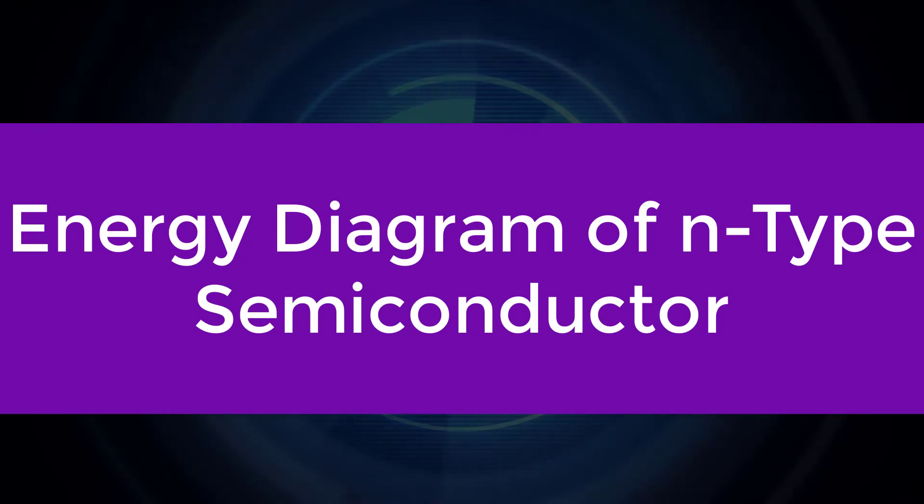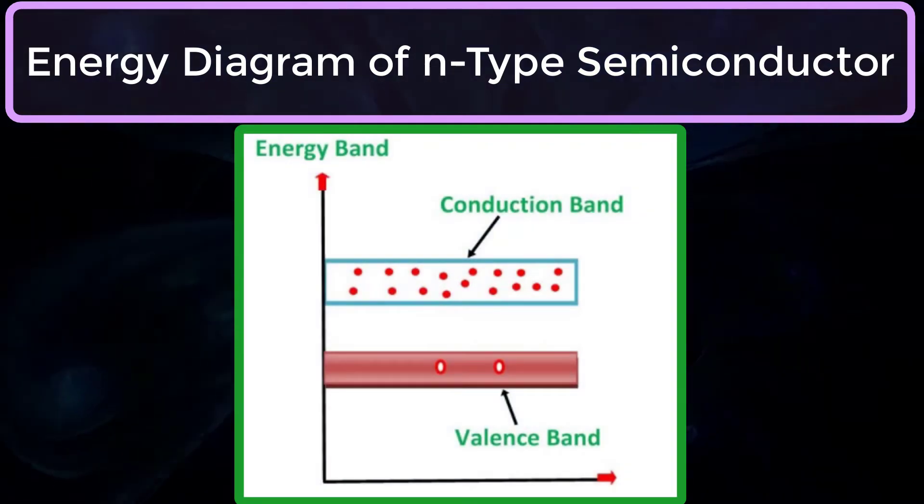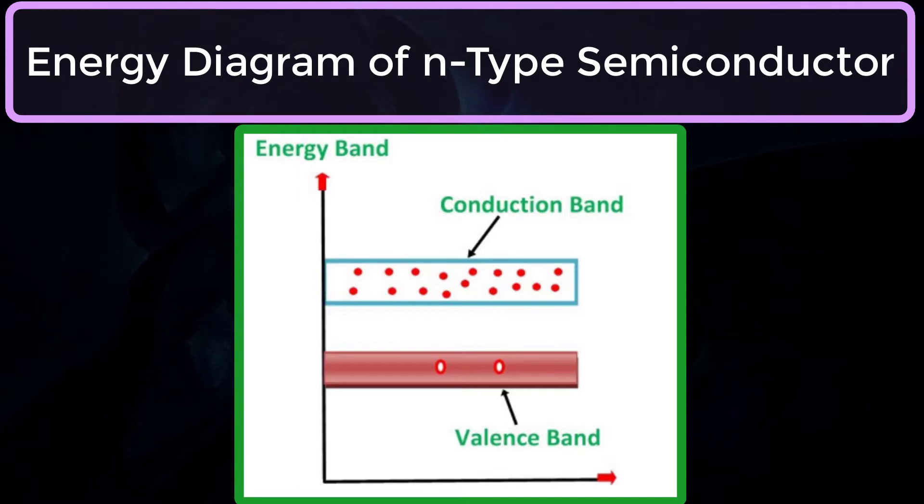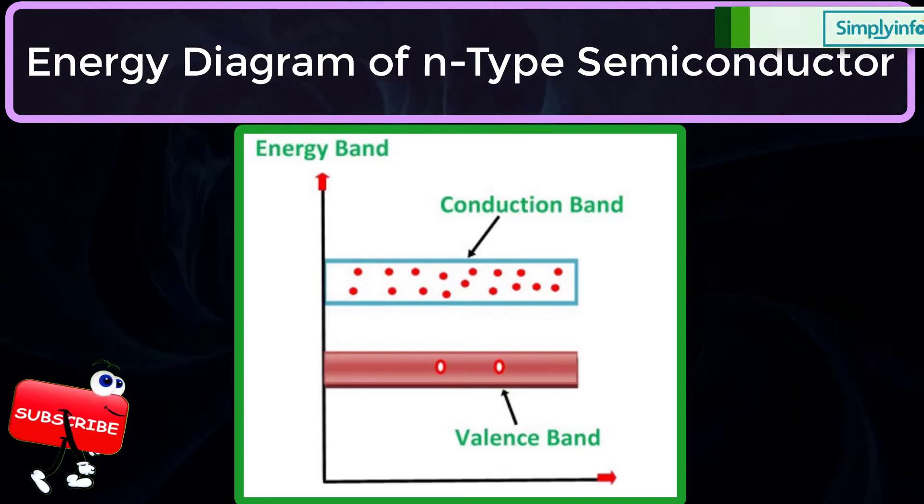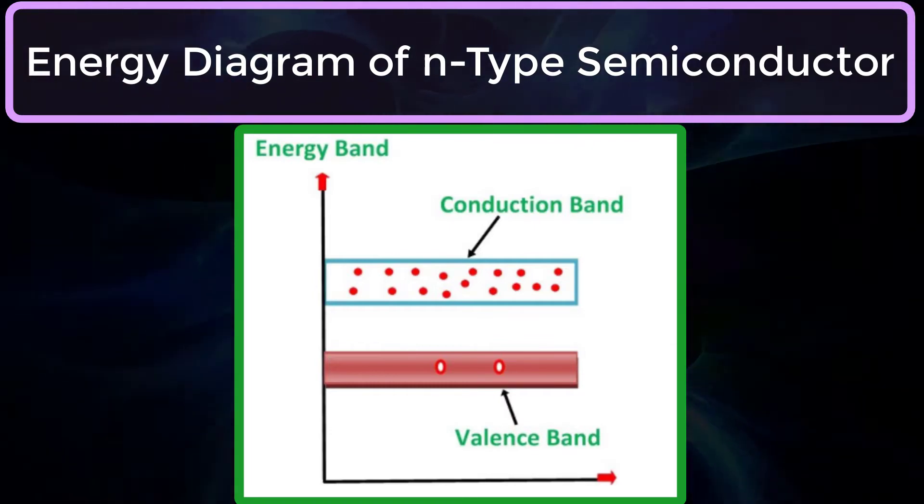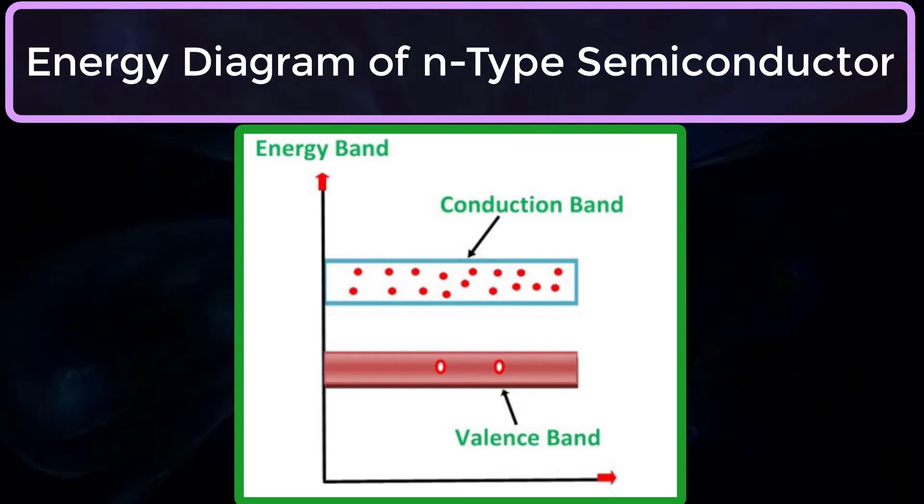Energy diagram of n-type semiconductor. The energy diagram of the n-type semiconductor is shown here. A large number of free electrons are available in the conduction band because of the addition of the pentavalent impurity. These electrons are free electrons which do not fit in the covalent bonds of the crystal.